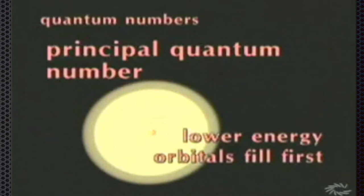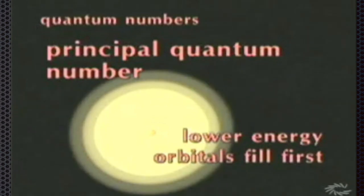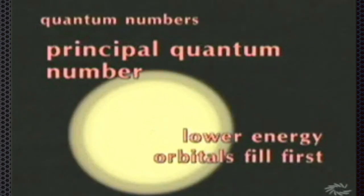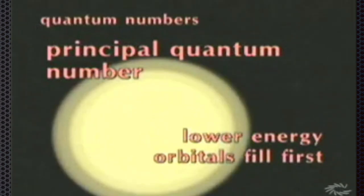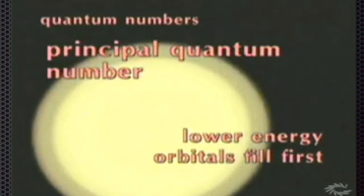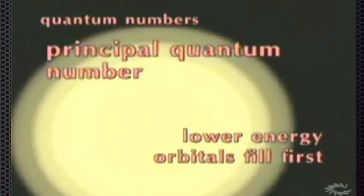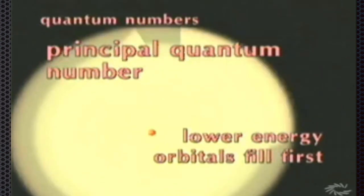Orbitals of lower principal quantum number have lower energy. The electrons first fill up the orbitals of lower energy before orbitals of higher energy.